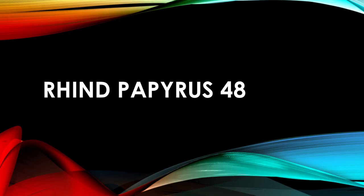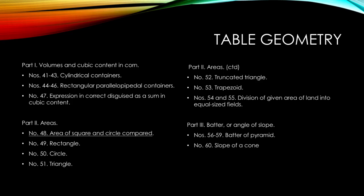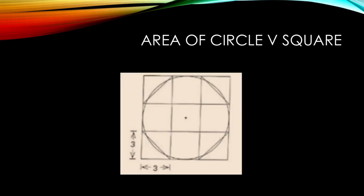Hello everybody and welcome to the Geoglyph Project. Today we're going to do a new problem, problem number 48 of the Rhind Papyrus. The problem is about comparing the area of a square with side 9 and the circle that is encased inside of that square.